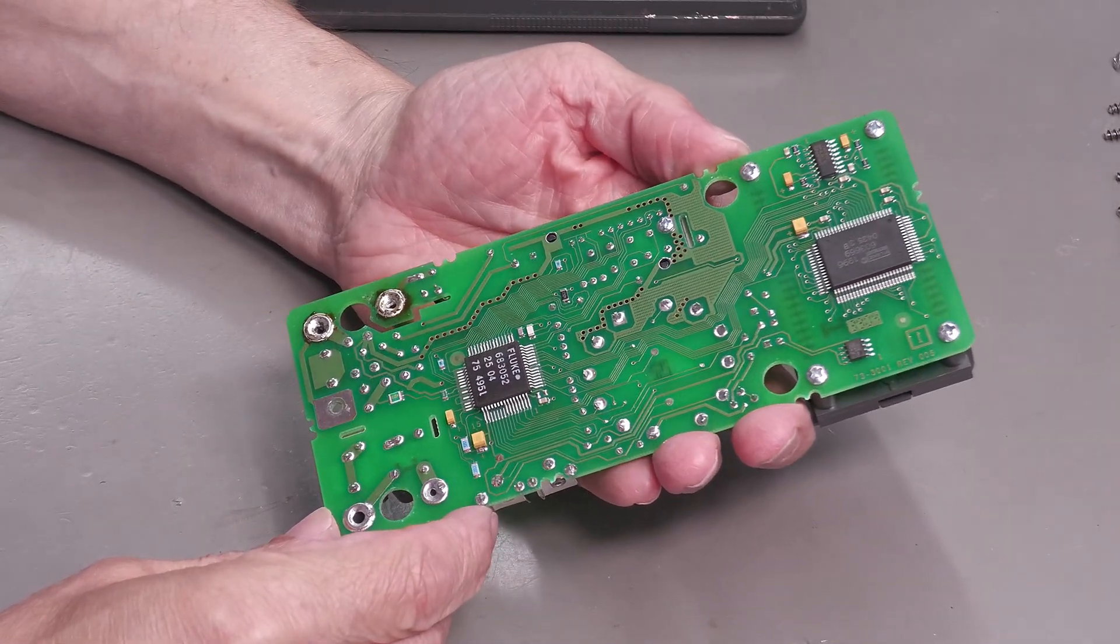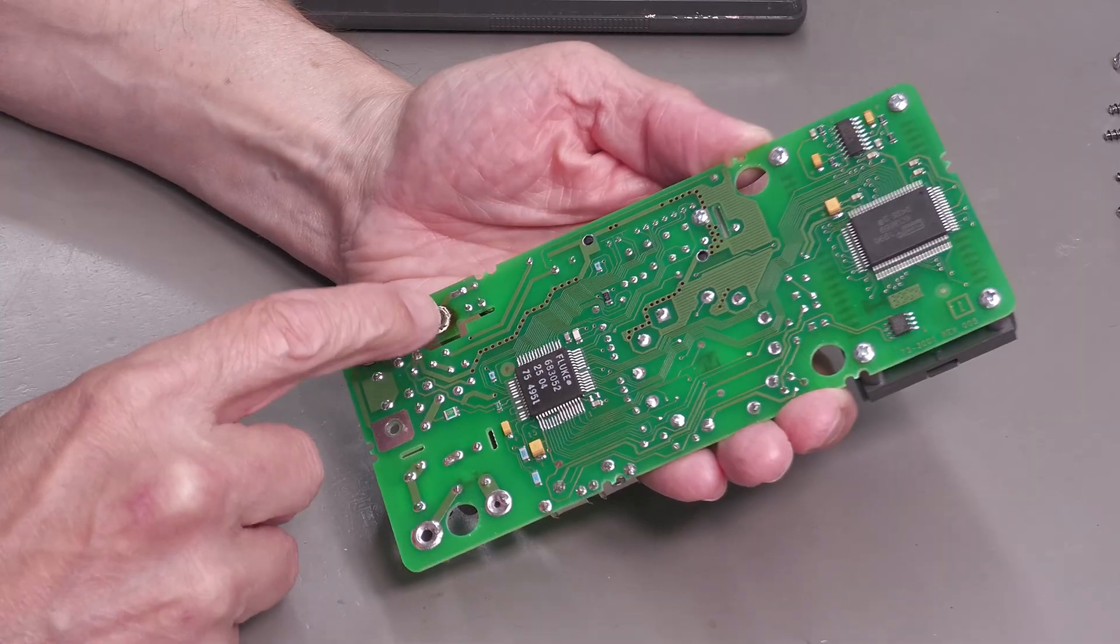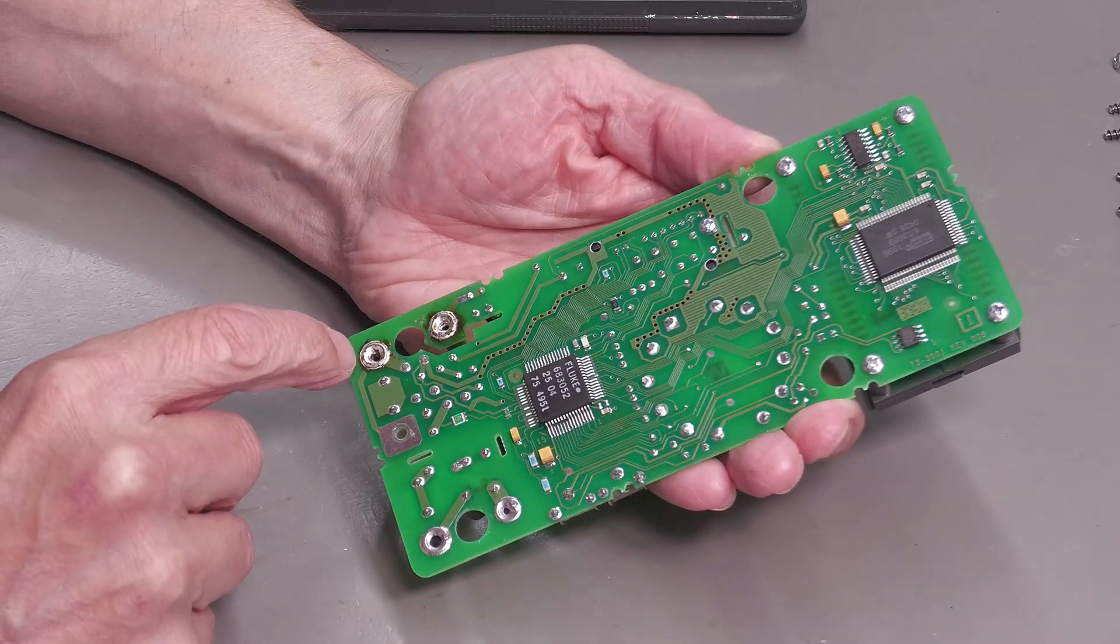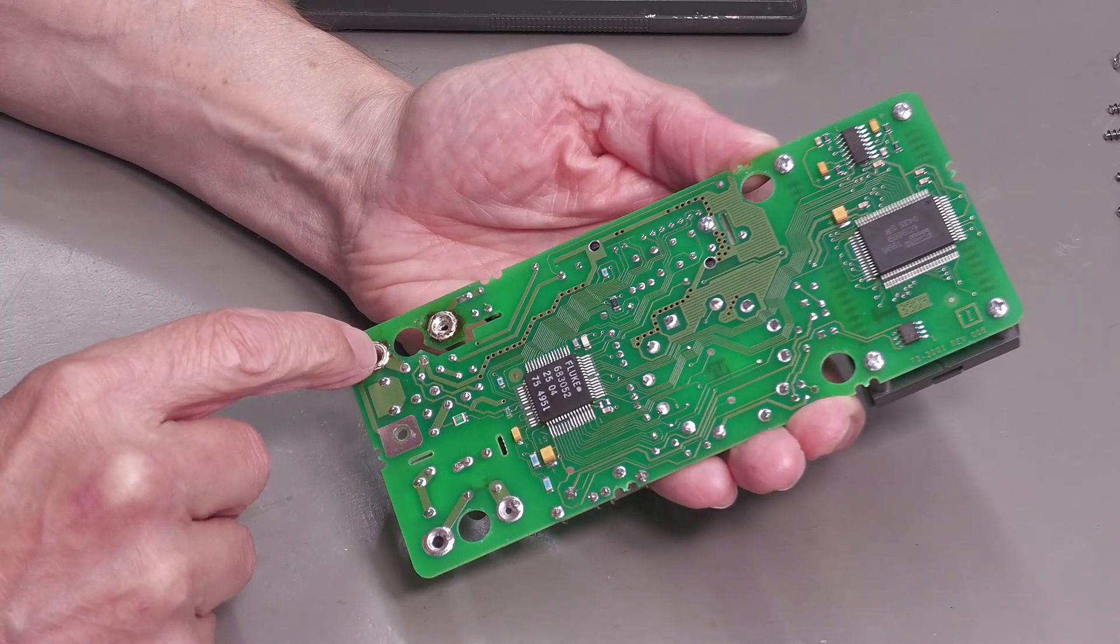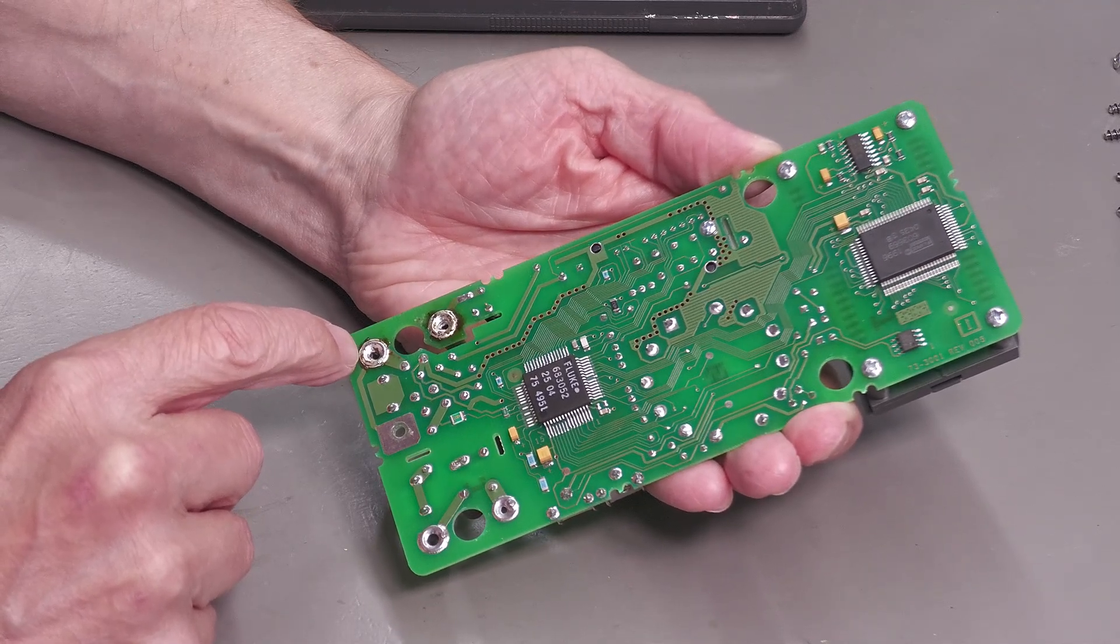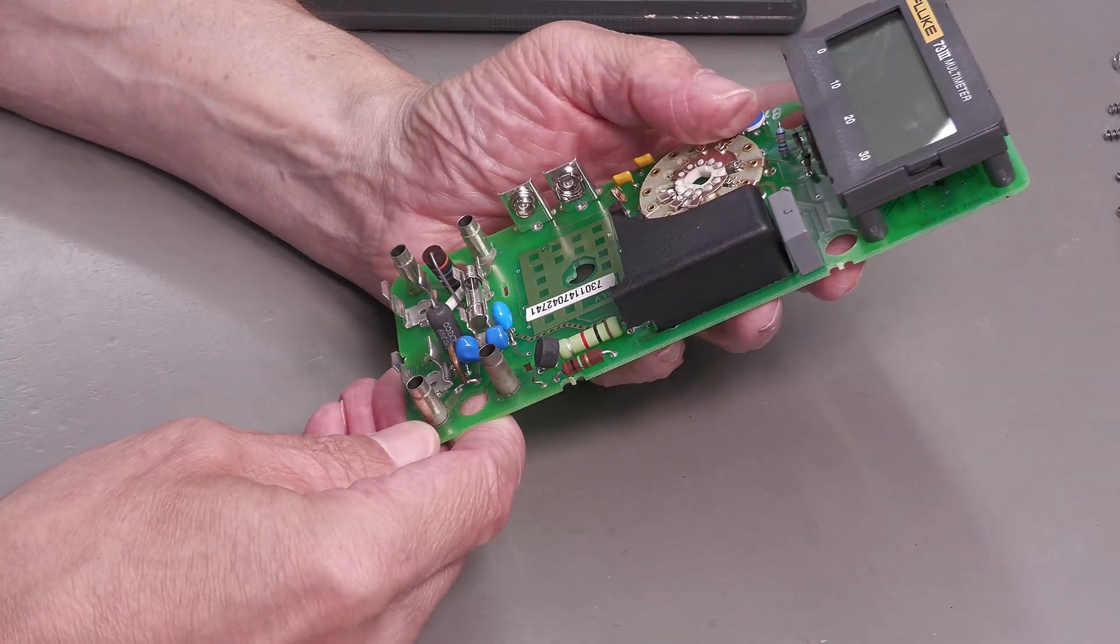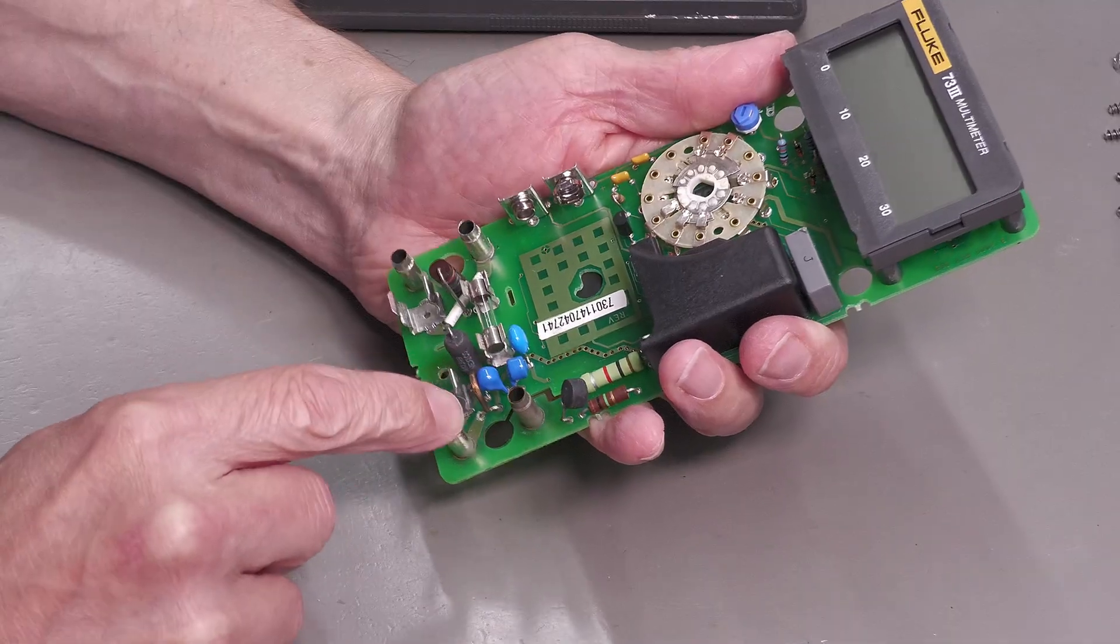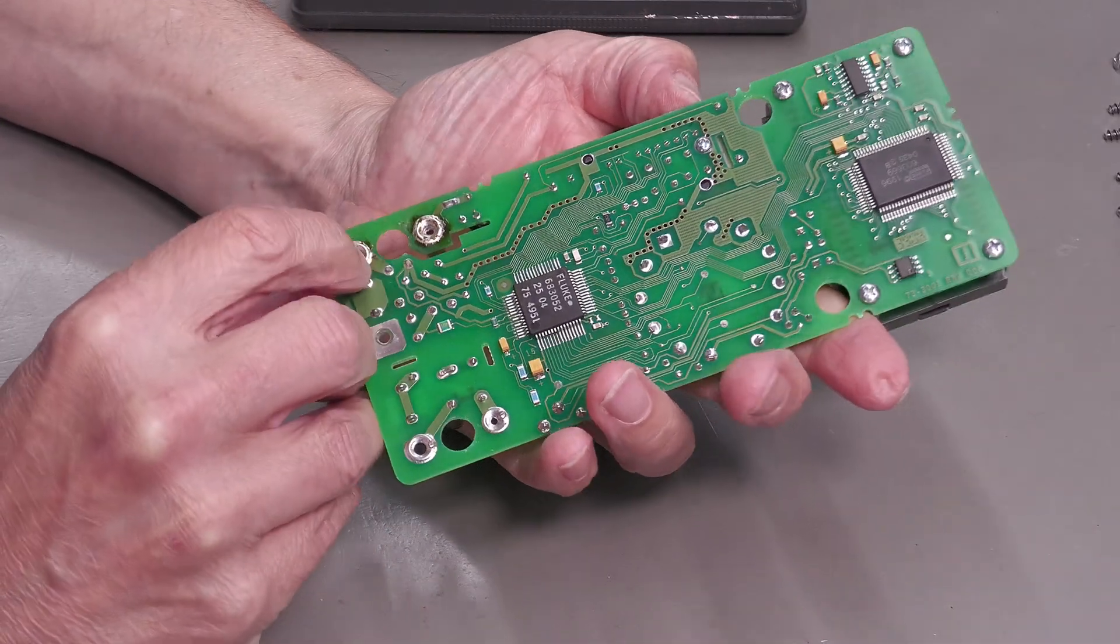And the back of the board doesn't look too bad either. Well down here it looks like we've got some flux or something down on those two banana sockets there. Perhaps somebody's been in here before and had a go, or I wonder if some goo ended up going down inside here from a spillage or something like that and ended up at the other side.